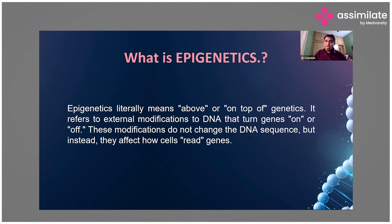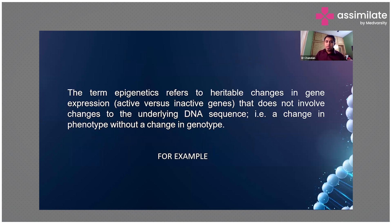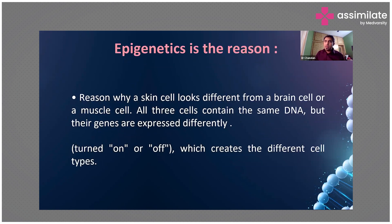Now let us understand what epigenetics is. Epigenetics literally means 'epi,' derived from a Greek word meaning 'on top of' — like we have something on top of it, we have something else. It refers to external modifications to the DNA that turn genes either off or on. These modifications do not change the DNA sequence. For example, the reason why a skin cell looks different from a brain cell is all because of this coding.